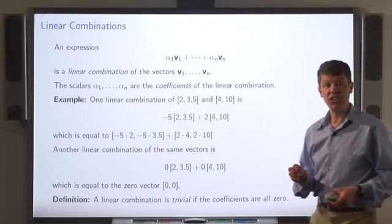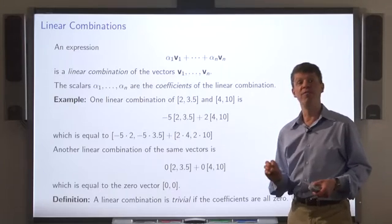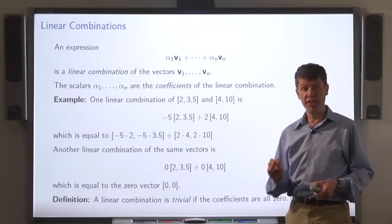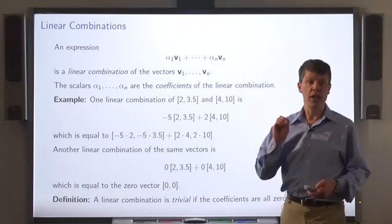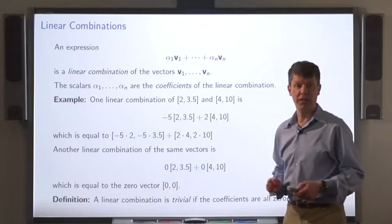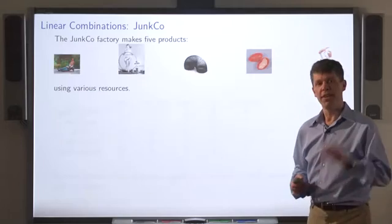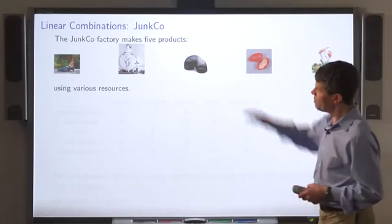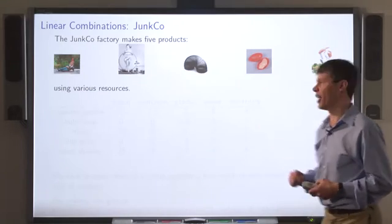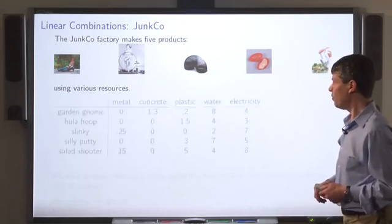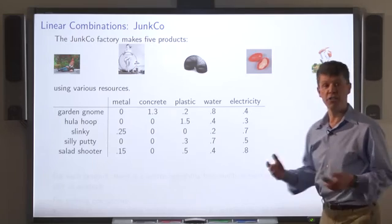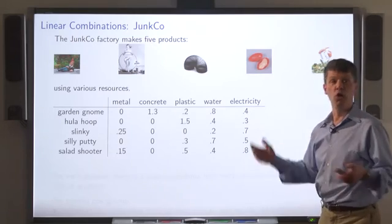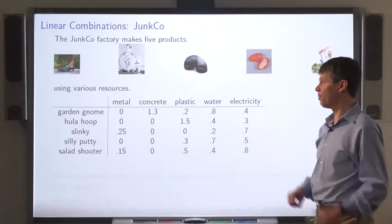A linear combination where all the coefficients are 0 is called the trivial linear combination. There's a factory called Junk Co that makes a bunch of products: a garden gnome, a hula hoop, and so on.